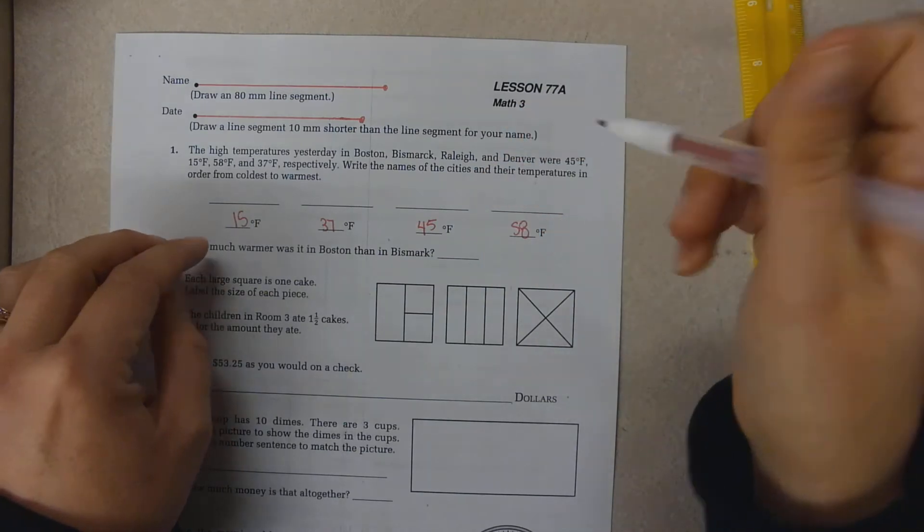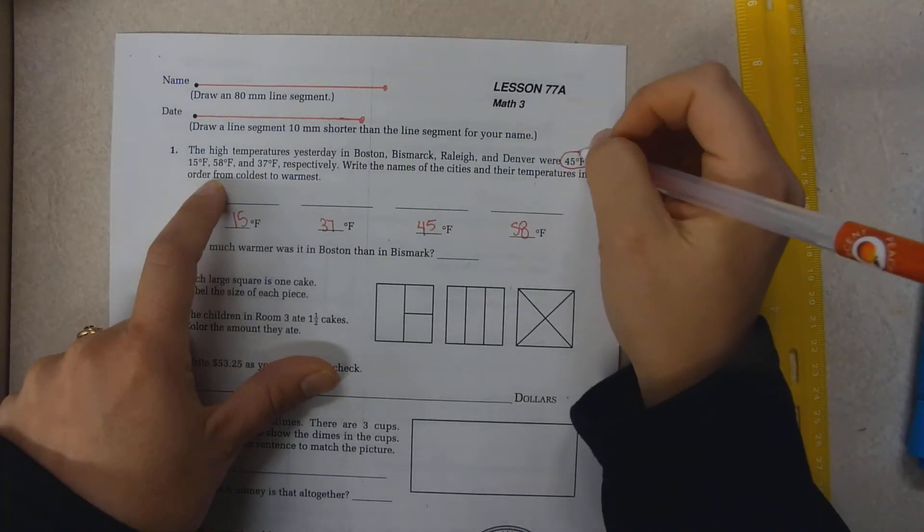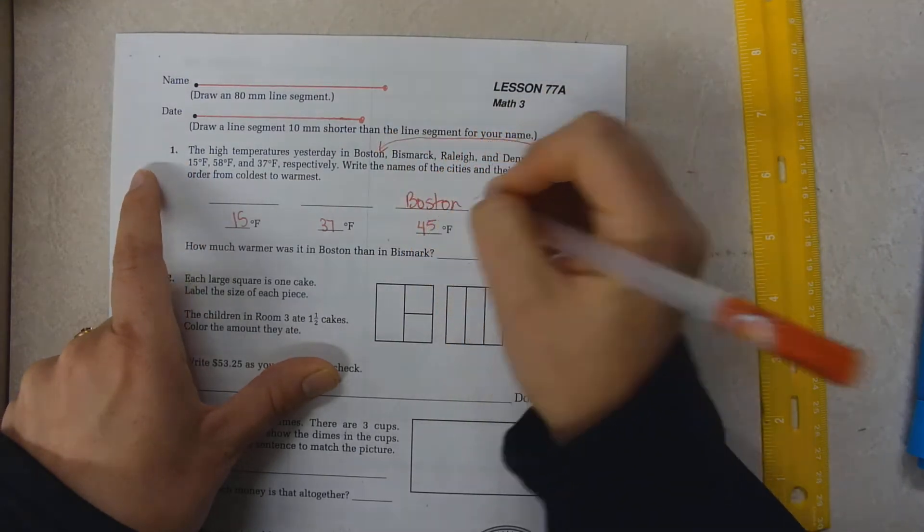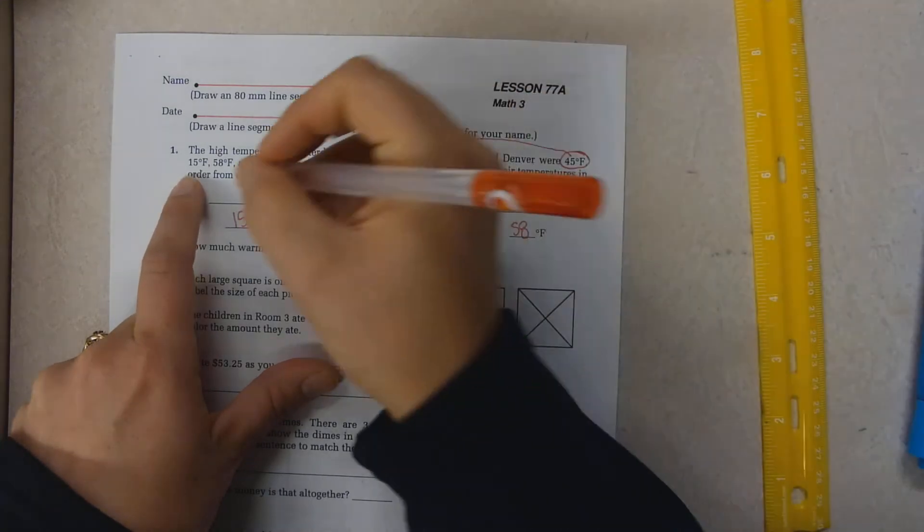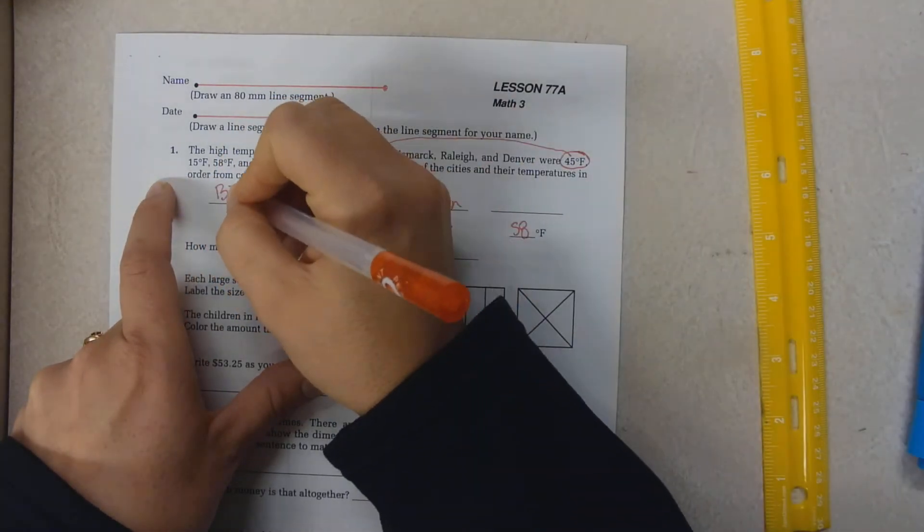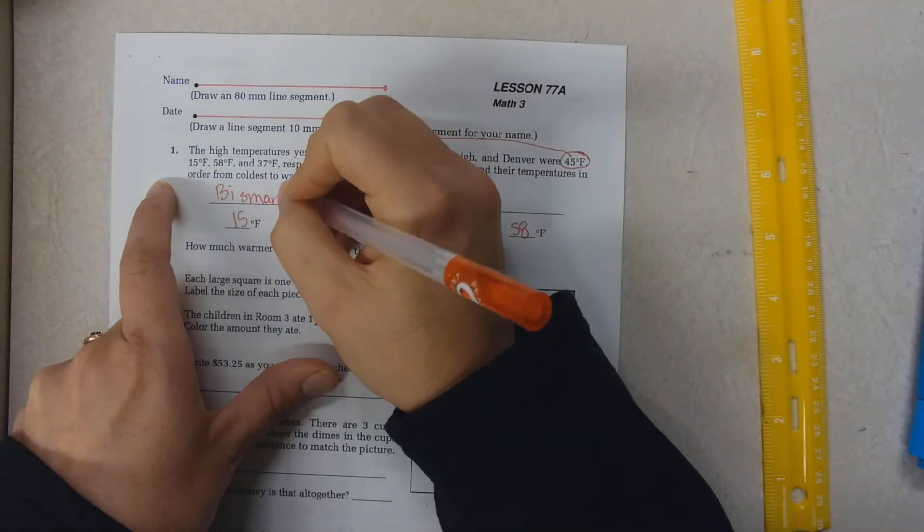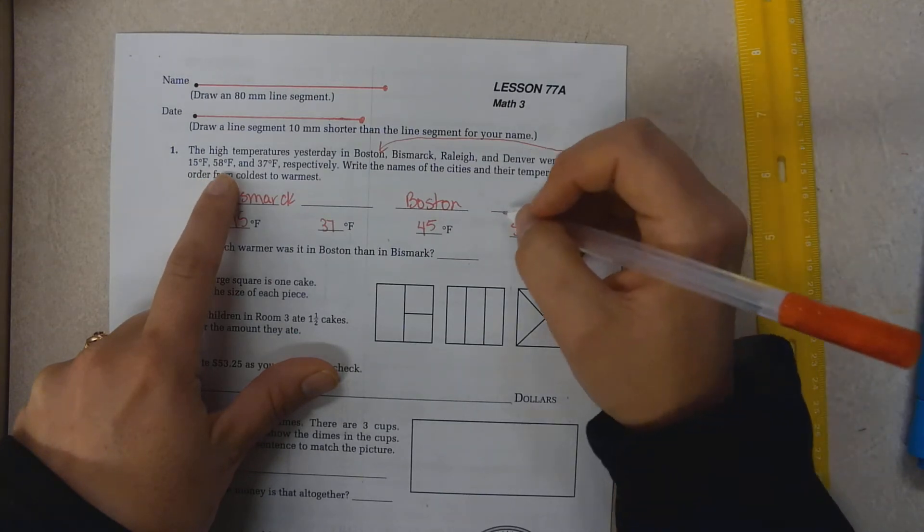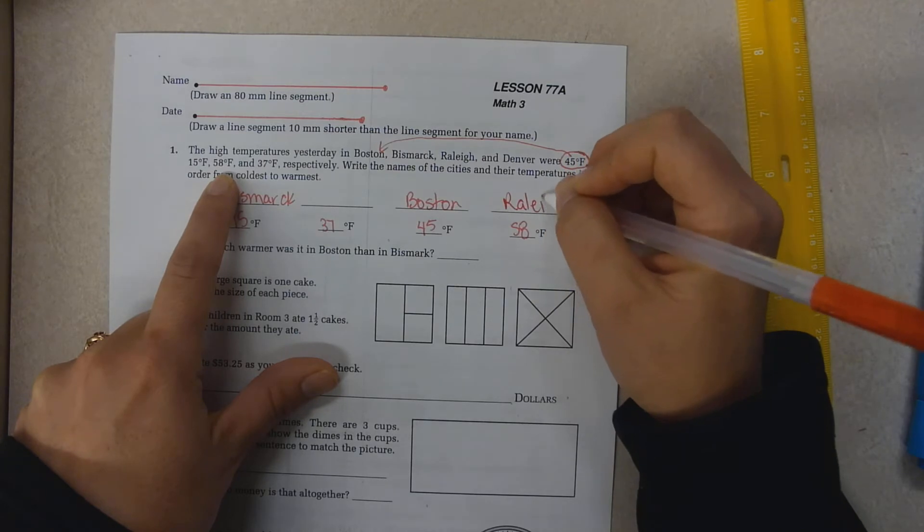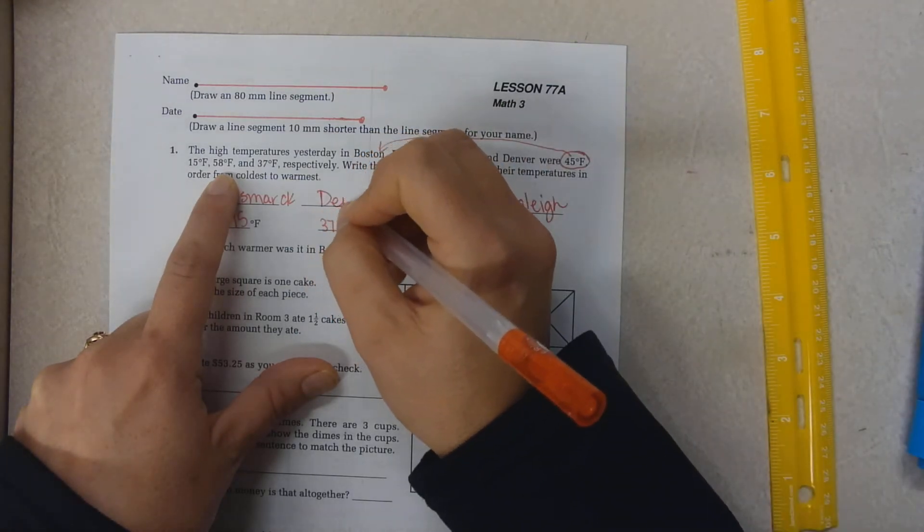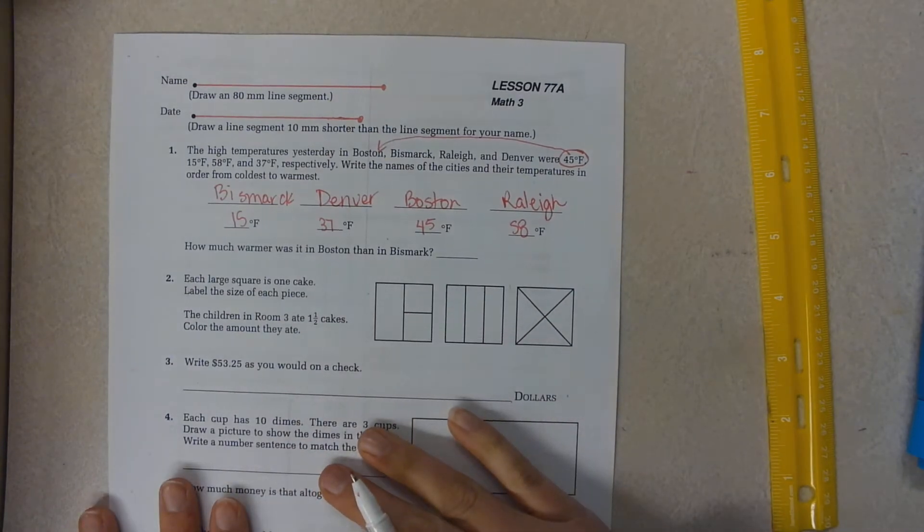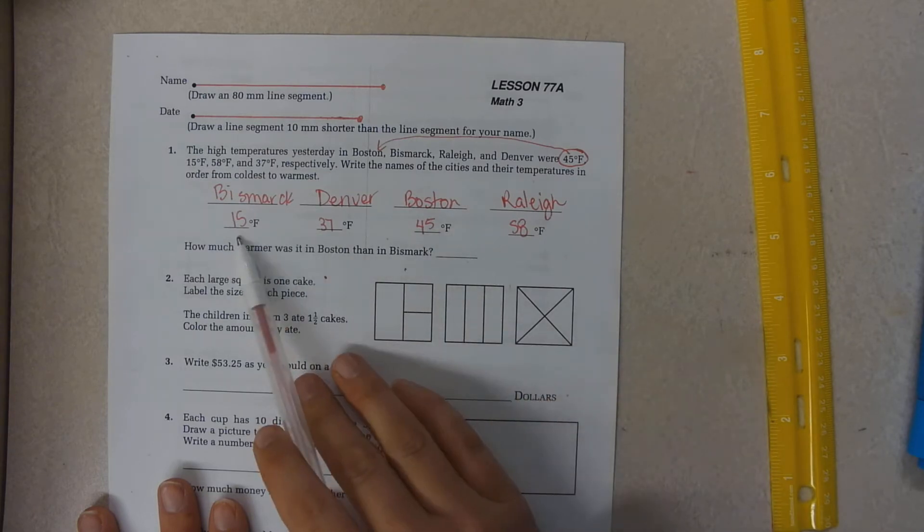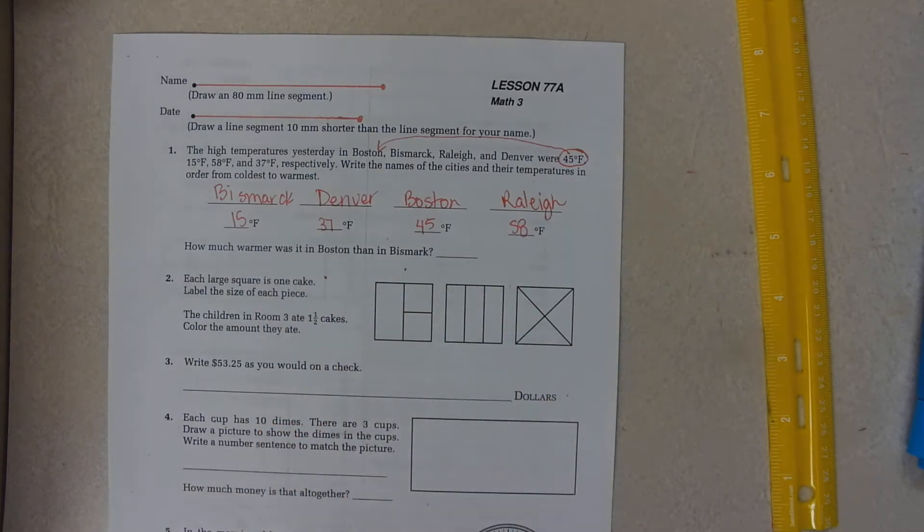Now I need to match them up. So 45 degrees Fahrenheit goes to Boston. Bismarck was 15. Raleigh was 58. And that leaves Denver at 37. How much warmer was it in Boston than in Bismarck? So 45 and 15. What was the difference?